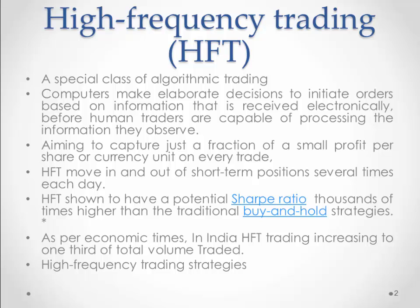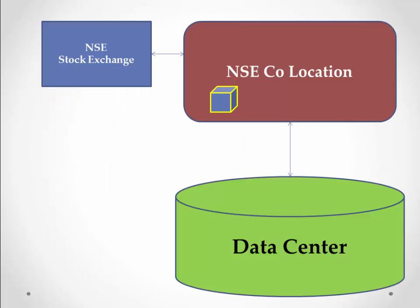Now a big question comes to mind: how is this much high frequency and speed possible? The answer is colocation and sophisticated algorithms. Let me give you a very simple explanation with a simple diagram. NSE stock exchange provides a colocation facility very near to the exchange in the form of rack spaces, connected to the exchange with high speed optical fiber cables.